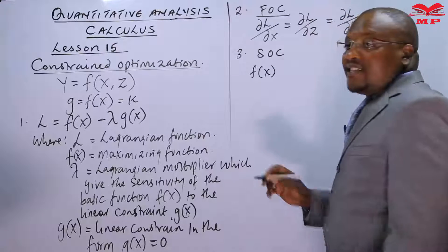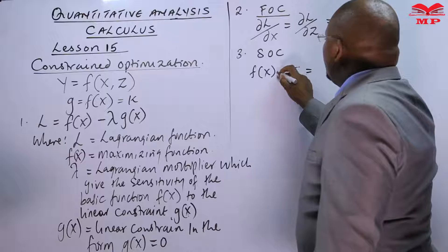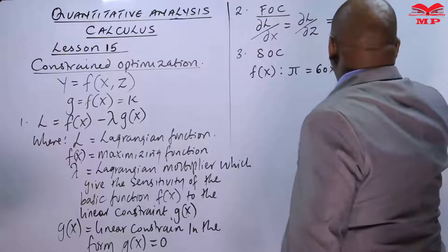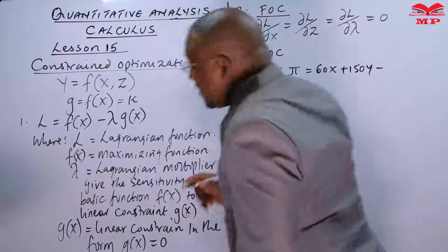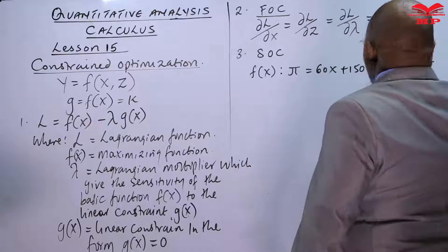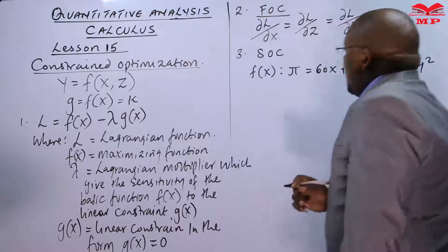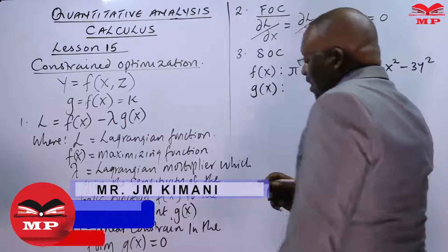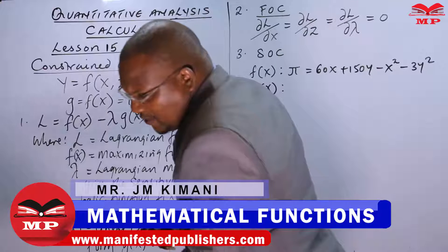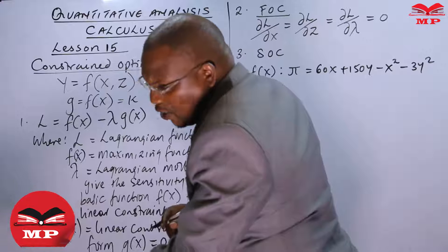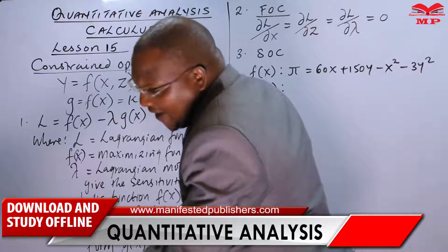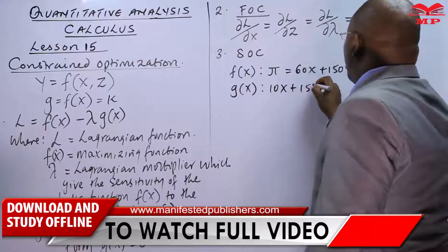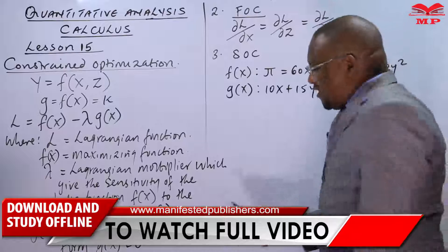We have the profit function π = 60x + 150y − x² − 3y². We also have the budget constraint, g(x), which states that 10 shillings per unit of x and 15 shillings per unit of y should not go beyond 850, giving us 10x + 15y = 850.